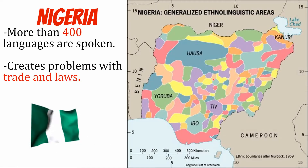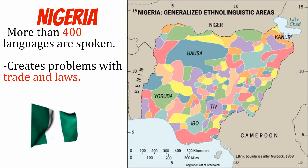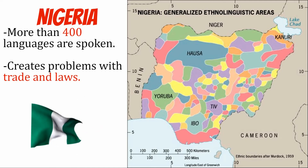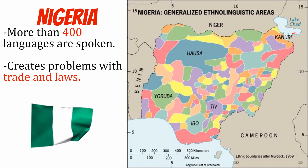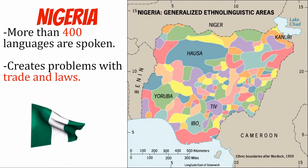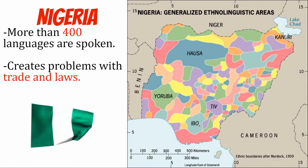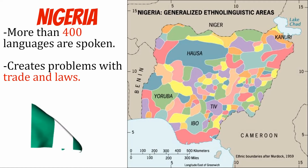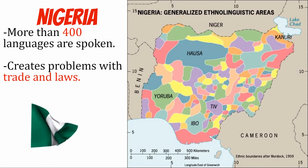Nigeria has 400 unique and identifiable languages, which is remarkable but also presents challenges. How do you conduct trade between far north and south? What language do you write laws in? What do you put on signs? Nigeria really struggles with its many languages. Some countries are monolingual, some bilingual, and Nigeria is highly multilingual — it speaks more languages than any country in the world.